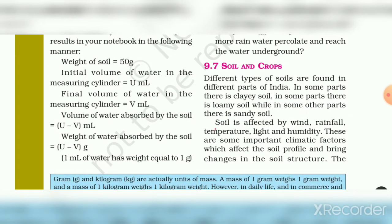Soil is affected by wind, rainfall, temperature, light, and humidity. These are the key climatic factors that influence soil.